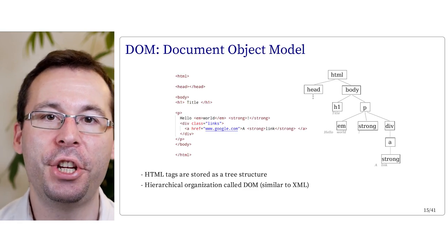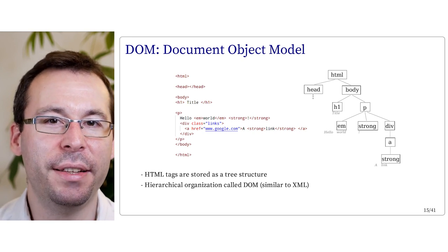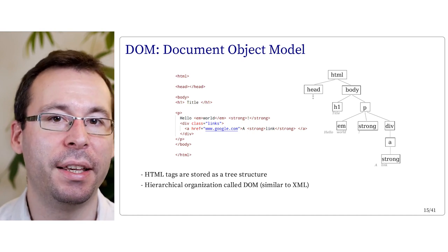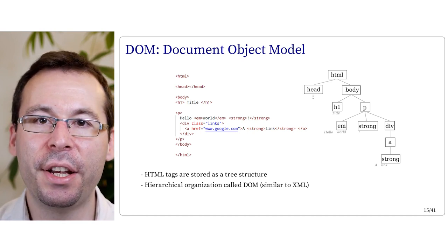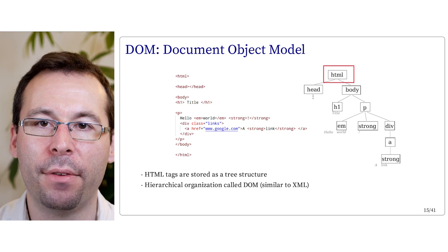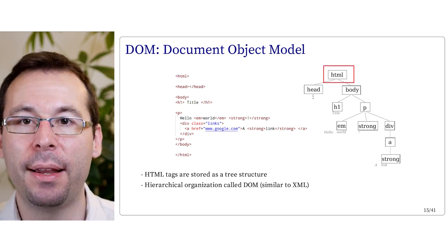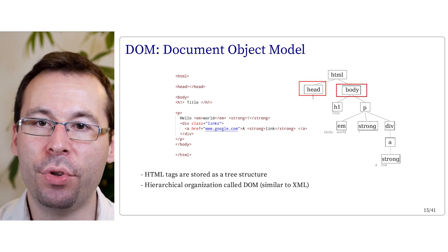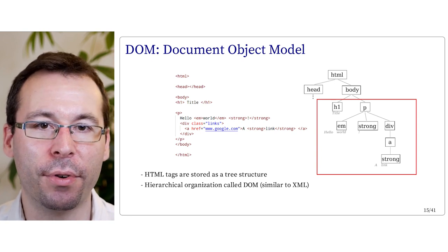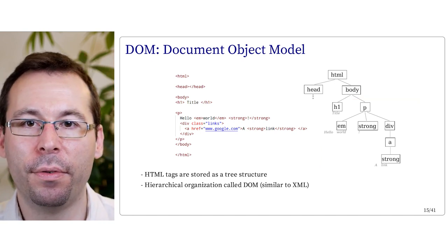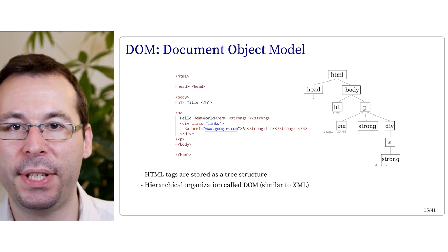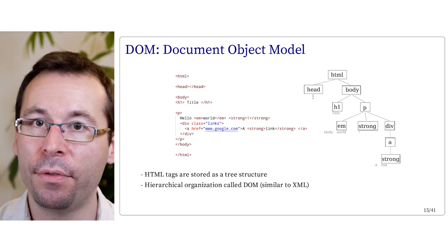To access an HTML element, we need to understand how it is structured. HTML elements are blocks with a hierarchical organization. This organization is accessible through JavaScript and is stored as a tree structure. For instance, at the top level you have the HTML element, which has two children: head and body. Inside the body element, you get the title and all other elements. This organization is called the DOM — Document Object Model — and JavaScript has access to this internal organization of the webpage.